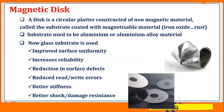The substrate is coated with an aluminium or aluminium alloy material. Since the aluminium or the alloy material is not better in resisting shock or damage, they have used the glass substrate instead of aluminium, where it provides uniformity, reliability, reduces surface defects, and also reduces read and write errors.